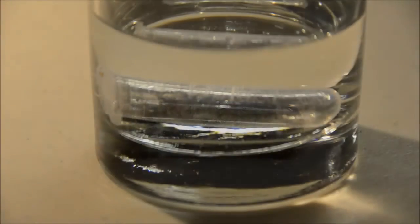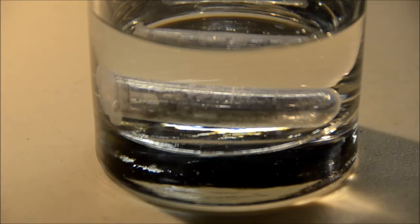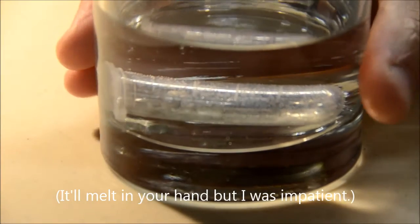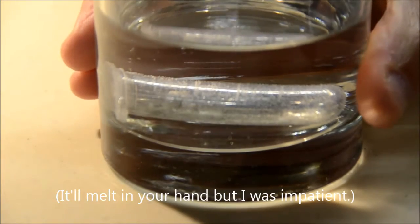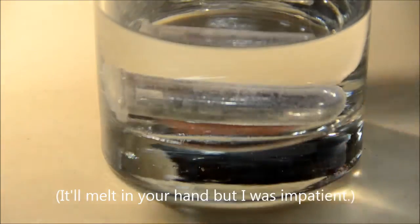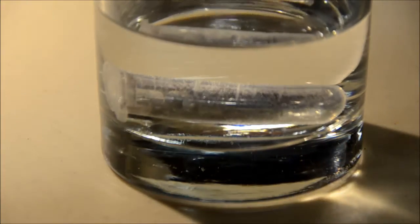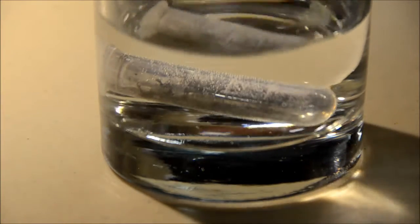Okay, now we've got the tube of gallium in some hot water. The temperature is probably about 120, 130 degrees, maybe a little bit more, yeah maybe 150, and it should be melting now.